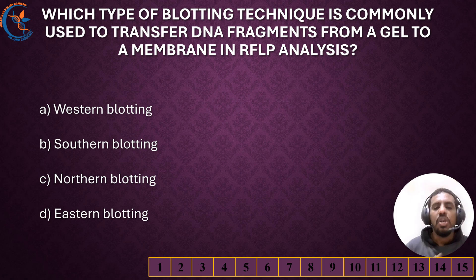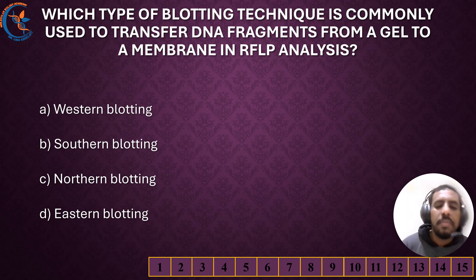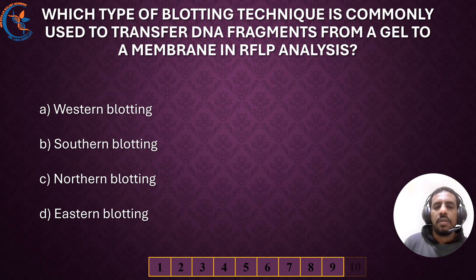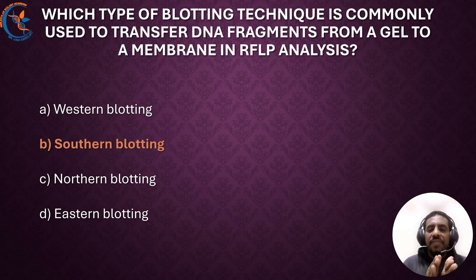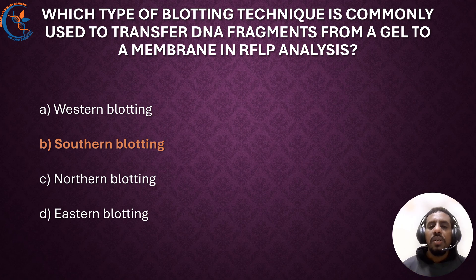Next question: Which type of blotting technique is commonly used to transfer DNA fragments from a gel to a membrane in RFLP analysis? The correct answer is Southern blotting. Southern blotting is the method used to transfer DNA fragments from an agarose gel onto a membrane, allowing for the detection of specific DNA sequences using labeled probes.